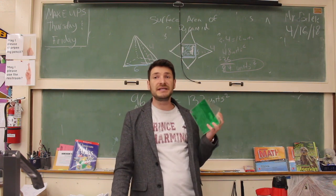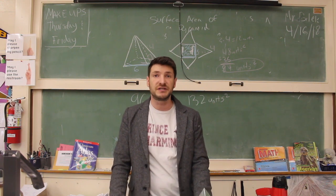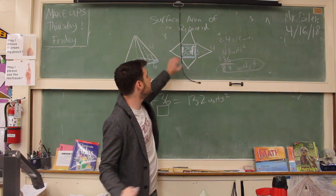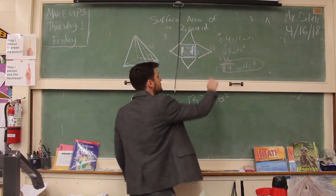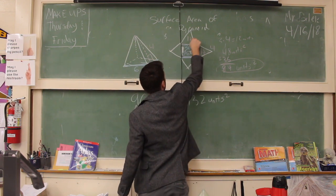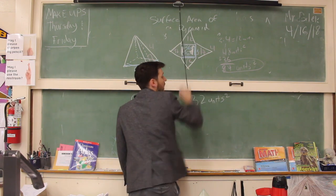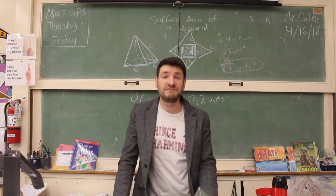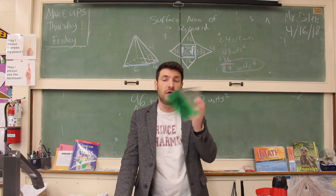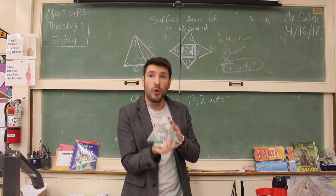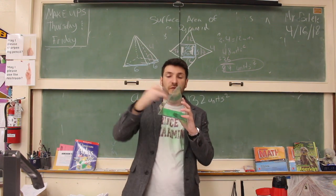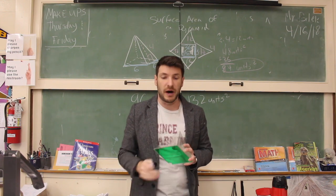A net makes it a lot easier to see and a lot easier to do the math because we realize that we have four equal triangles, each one of these being 12, 12, 12, and 12. And that is how we find the surface area of a triangle. We can use the net or just the picture with four equal sides and that square bottom.